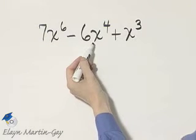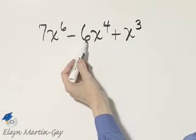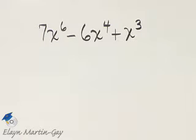I have 7x to the 6, 6x to the 4, and x cubed. For the coefficients 7, negative 6, and 1, the greatest common factor there is 1 or negative 1, so nothing to factor out.